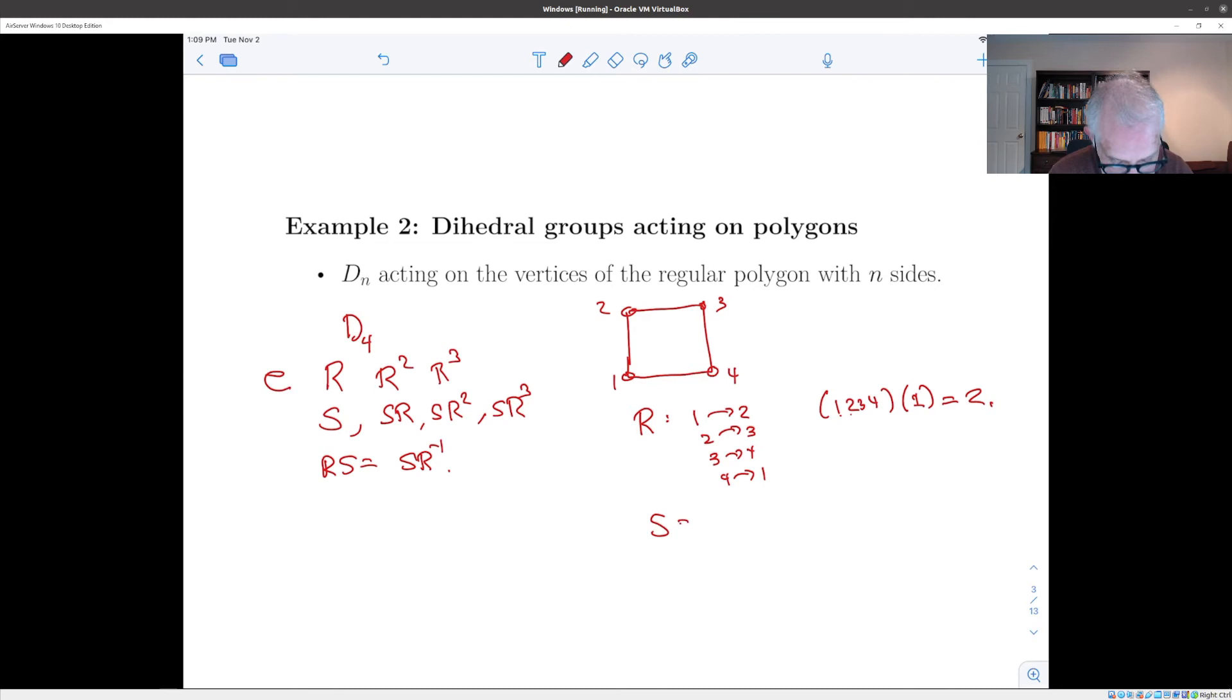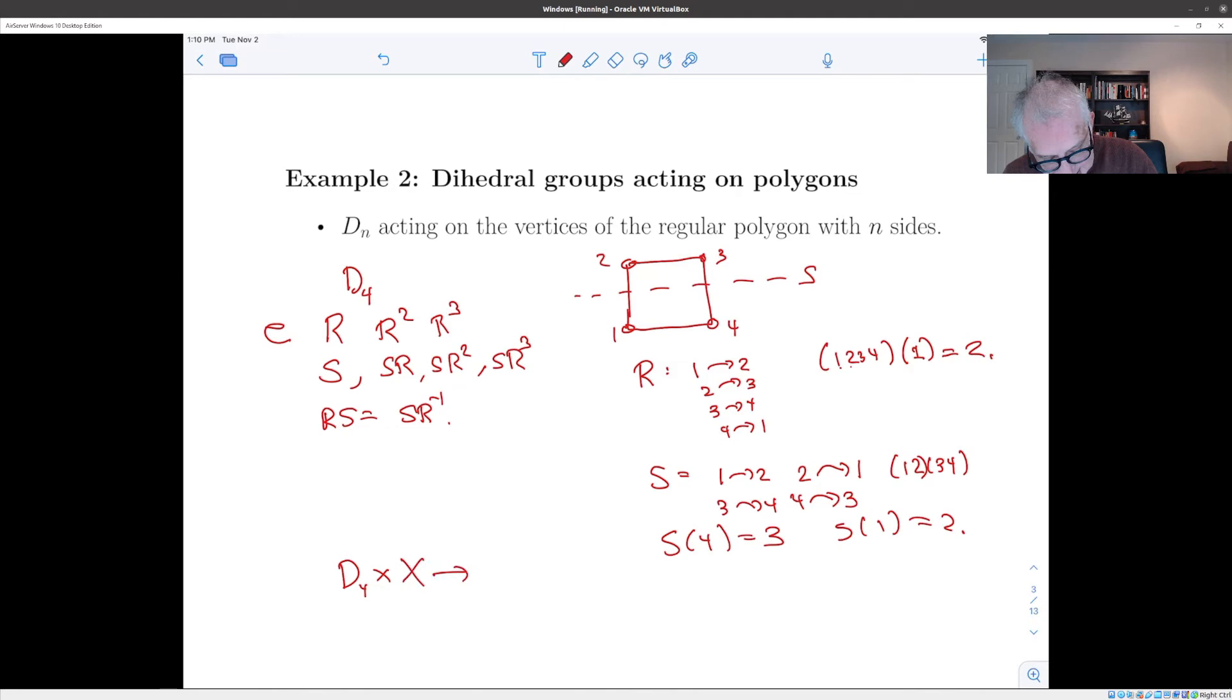And similarly, if S was our reflection, for instance, suppose we could pick any reflection that we wanted to start with. How about we pick this one to be S? So S is the reflection which sends 1 to 2 and 2 to 1 and 3 to 4 and 4 to 3. In other words, we could write it as (1, 2)(3, 4). And again, if we want to know what is the action, we know that s of 4 is 3, for example, and s of 1 is 2. So this gives the action D_4 cross X to X, where X is the four element set corresponding to the vertices of our square.